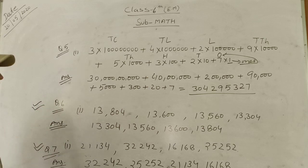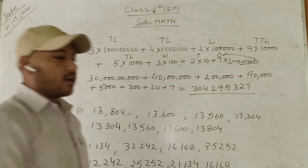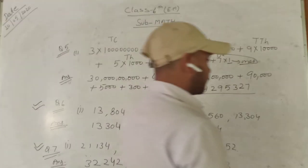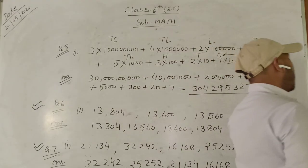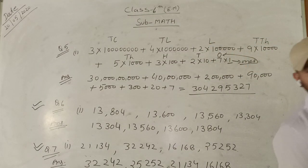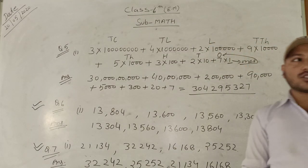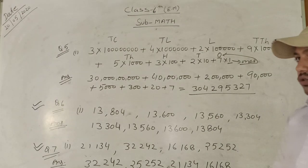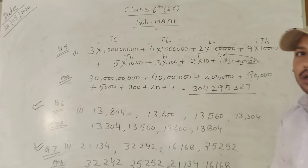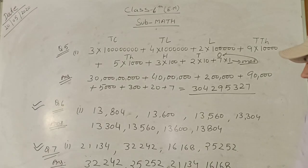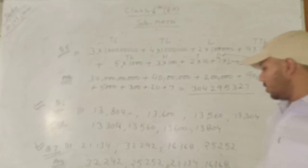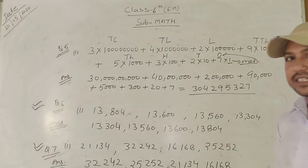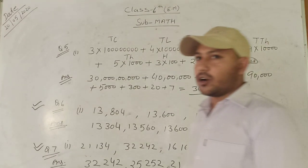So to summarize: question number 6 asks to arrange in ascending order — that means lowest to highest. And question number 7 asks to arrange in descending order — that means highest to lowest.